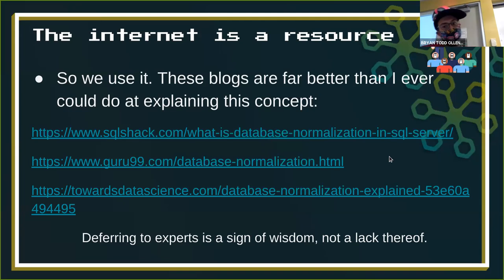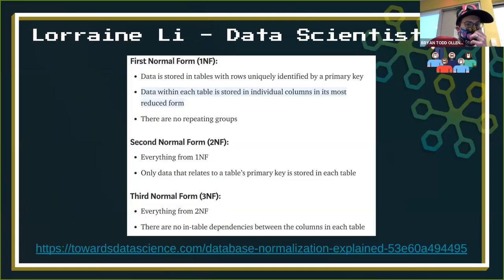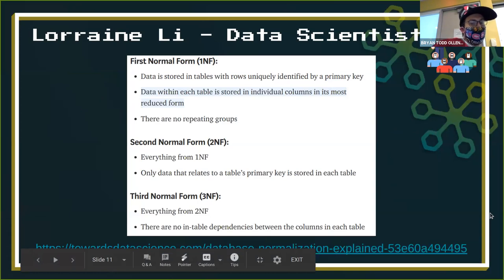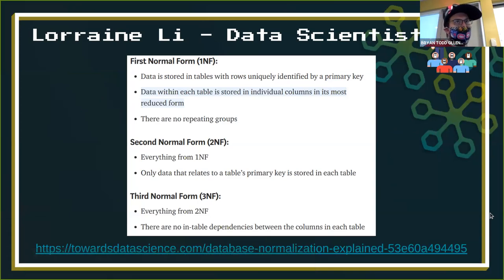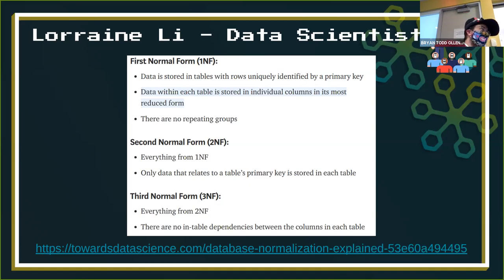Deferring to experts is a sign of wisdom and not a lack thereof. I found this article by Lorraine Lee, who's a data scientist, and she really boils down the first three normal forms very concisely. First normal form: data is stored in tables with rows uniquely identified by primary key. We effectively satisfied first normal form throughout all of our diagram process when I kept emphasizing we need unique keys. If you have data in a table that's not relatable elsewhere, you're not even at first normal form. Most likely, based on everything I saw, everyone's tables are hitting first normal form.